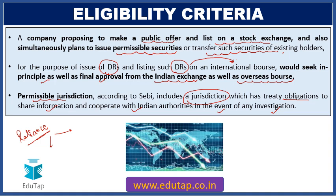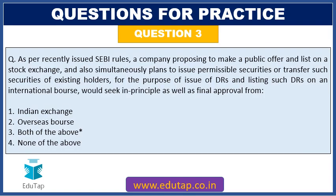Germany would be a permissible jurisdiction because it has the relevant infrastructure to share information with Indian authorities. However, if there is any other country — such as one that does not have a proper agreement with India regarding sharing of information — then Reliance would not be able to issue depository receipts there. So, if a company proposes to make a public offer on the Indian stock exchange and also wishes to issue depository receipts, it must take approval from both. The answer is option number three — both of the above.